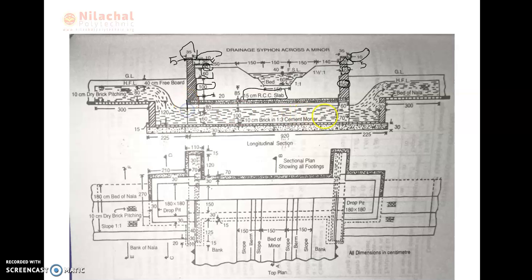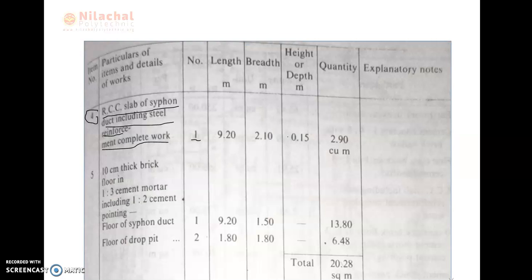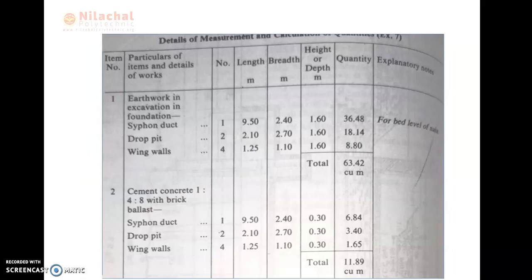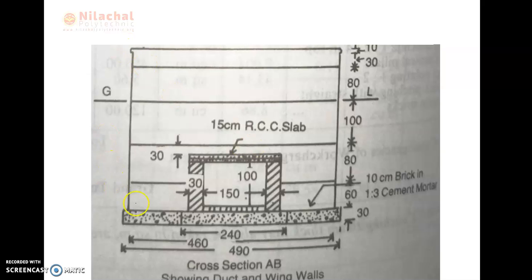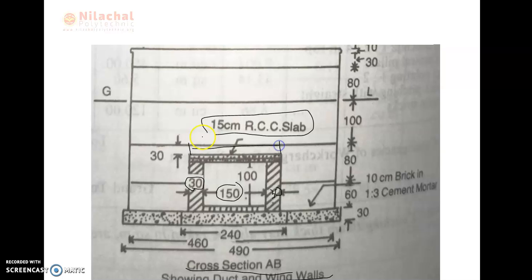From this point to this point, the value is 9.20. The length of the access slab is equal to 9.20. The breadth is equal to 2.10. We define the breadth from the cross-section, because the access slab is provided over the full cross-section. The breadth is 30 plus 150 plus 30, which equals 2.10 m.